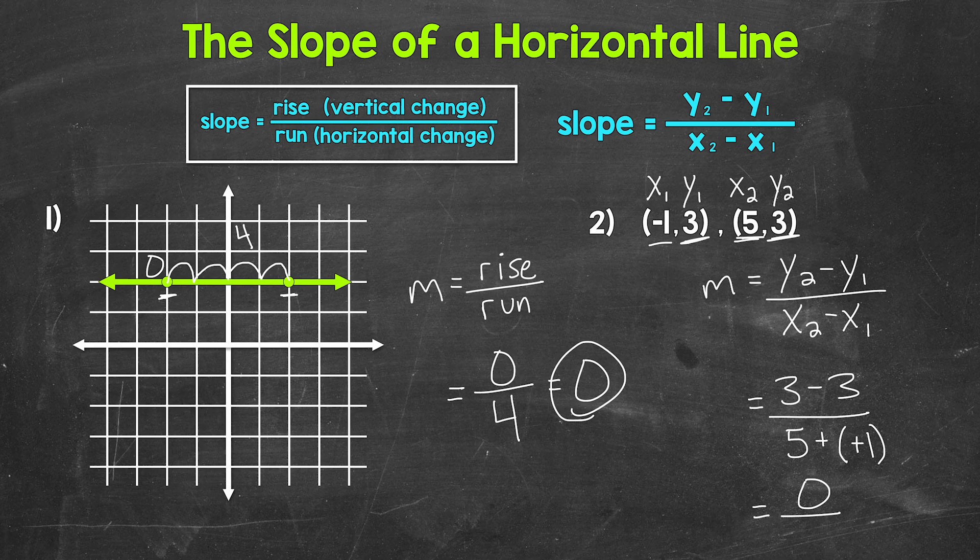So we have 5 plus 1. That gives us 6. So our slope here is 0 over 6. We have that numerator of 0, so we can just write this as 0. So we have a slope of 0 here.